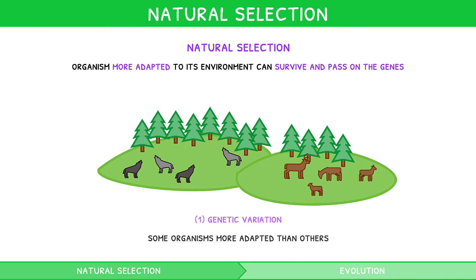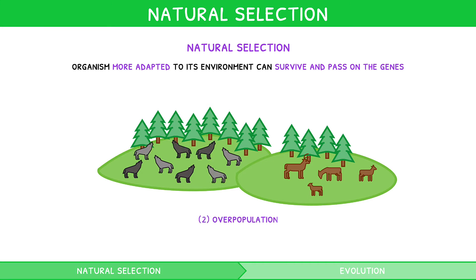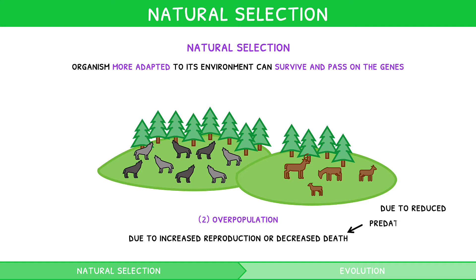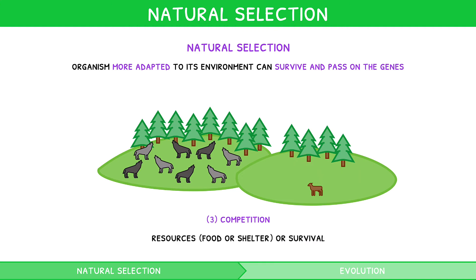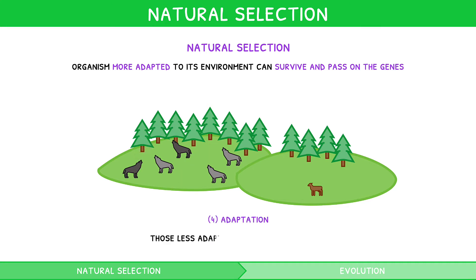Then, there is overpopulation in the habitat, either due to increased reproduction or a decreased death rate, which can be due to reduced predation or disease. This then creates competition for resources such as food, shelter, or survival. The organisms more adapted to the habitat are therefore more likely to survive, and those that are not are more likely to die.